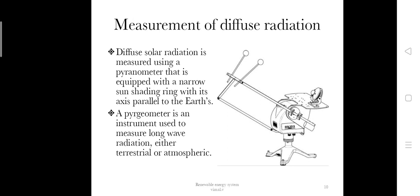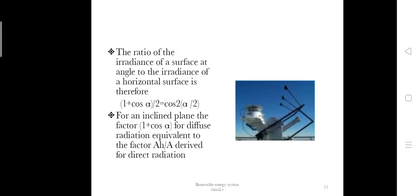The ratio of incidence on a surface at an angle to irradiance on a horizontal surface is given by this formula: (1 + cos α)/2 = cos²(α/2).